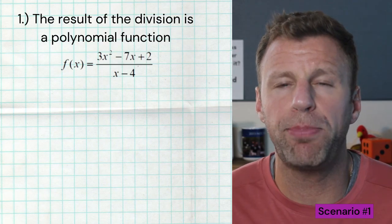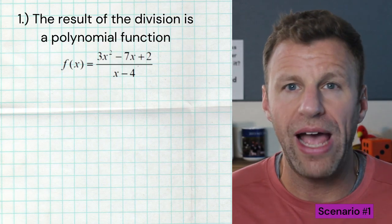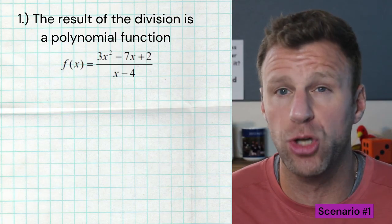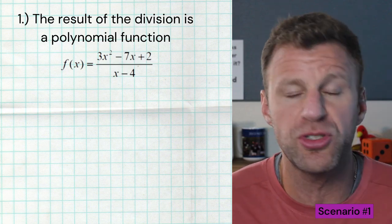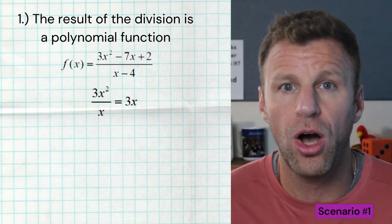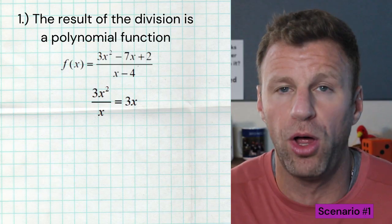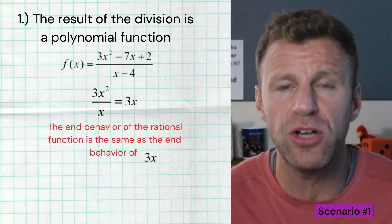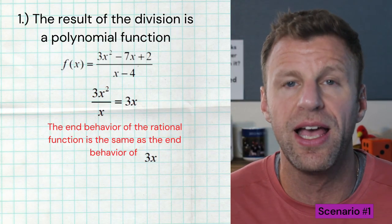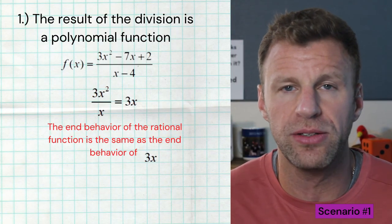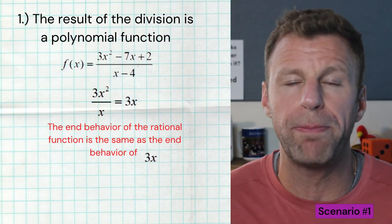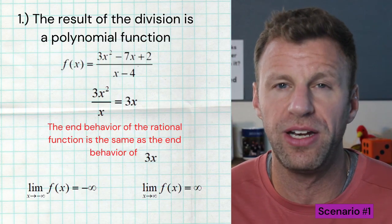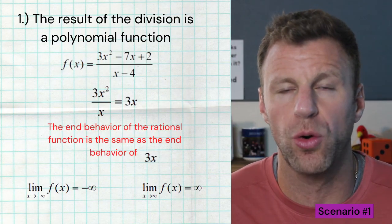Here is a second example of this same scenario. We have a leading term of 3x squared in the numerator and a leading term of just x in the denominator. We divide those leading terms to get 3x — a polynomial function. The end behavior of the rational function mirrors the end behavior of 3x. That's an odd degree with a positive leading coefficient, so the right end behavior goes towards positive infinity and the left end behavior goes towards negative infinity.